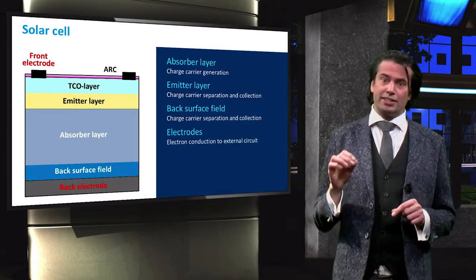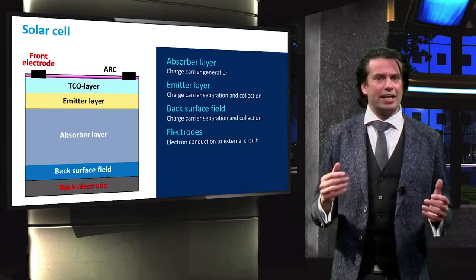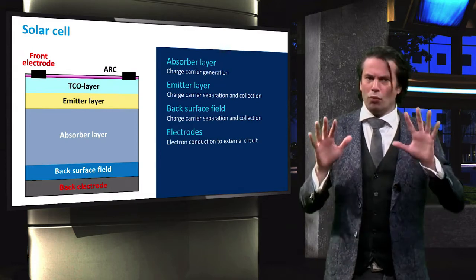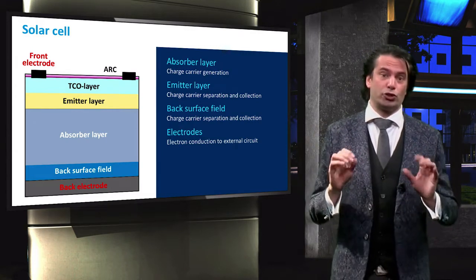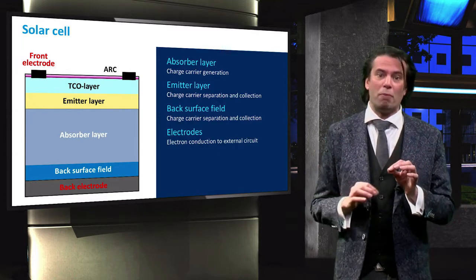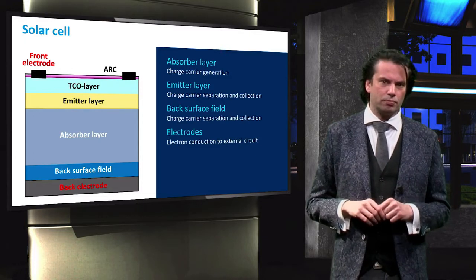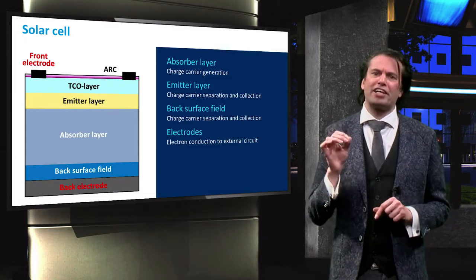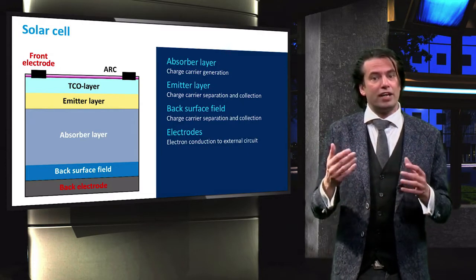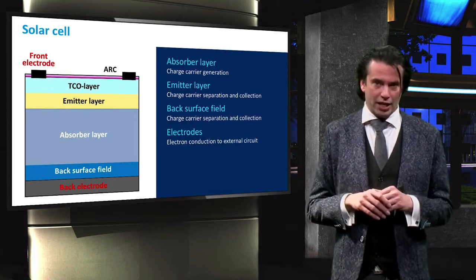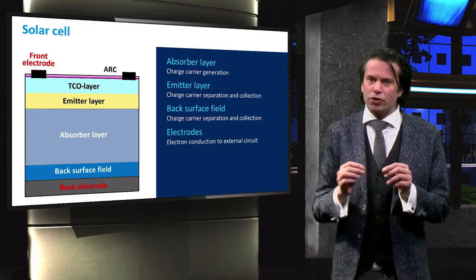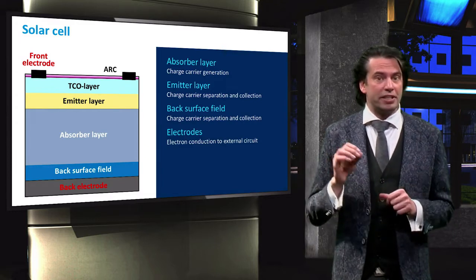In order to collect these carriers and send them to an external circuit, metallic contacts or electrodes are needed at both sides of the solar cell. When a solar cell is connected to an external circuit, the excited electrons will flow through the circuit to recombine with the holes at the other electrode. Only a small fraction of the front surface is covered by electrodes, so charge carriers have to move laterally to the front electrode. In a high-quality crystalline silicon solar cell, this lateral charge carrier movement takes place in the emitter layer.